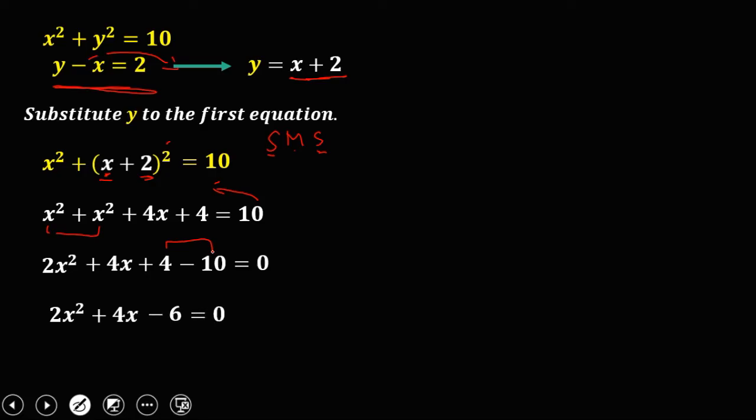So this one is a quadratic equation, but we can reduce this equation because we have this common. So 2, 4, and 6, those numbers are divisible by 2. So reduce. Divide this 1 by 2, divide by 2, and divide by 2. So we have now x squared plus 2x minus 3 equals 0.